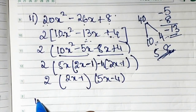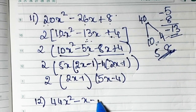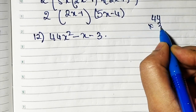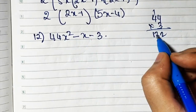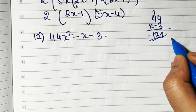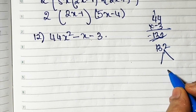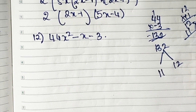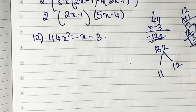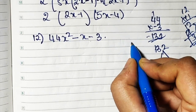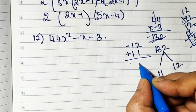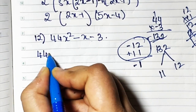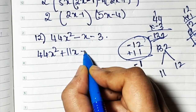Now the last sum, sum number 12: 44x squared minus x minus 3. I can't take anything common. So let's multiply the first and the last. So I have 44 multiplied by 3. 4 threes are 12, and then 132. So it's going to be minus 132 basically, because it's minus 3. So I have to break 132. The factors of 132: it's 11 and 12 — 12 into 11 is 132. Now signs to decide: if I take 12 and 11, put minus here and plus here, it's going to be subtraction. Minus 1, and minus is the sign of the greater number. So the combination is minus 12 and plus 11. So: 44x squared plus 11x minus 12x minus 3.